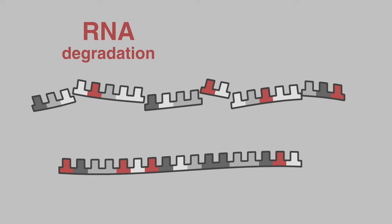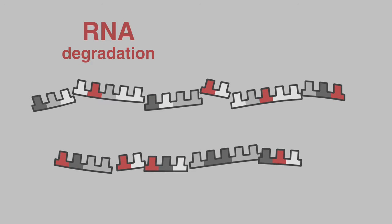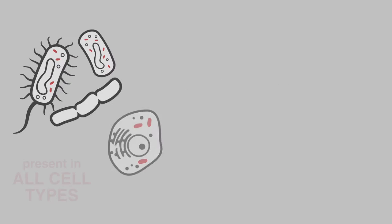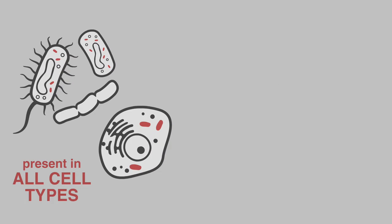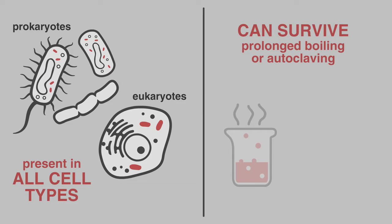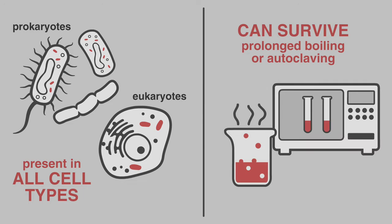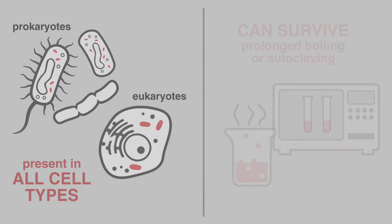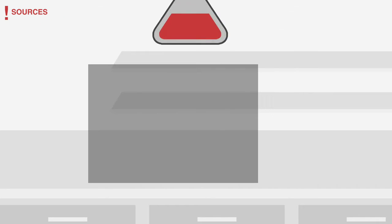Preventing RNA degradation is trickier than preventing DNA degradation. RNases are present in all cell types from prokaryotes to eukaryotes and can sometimes survive prolonged boiling or autoclaving. So, what are the major sources of RNase contamination in the lab?